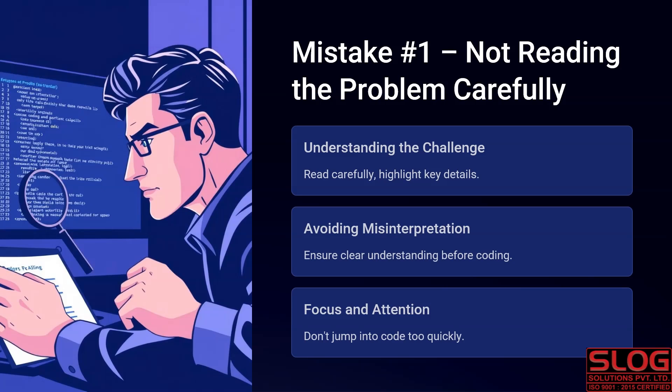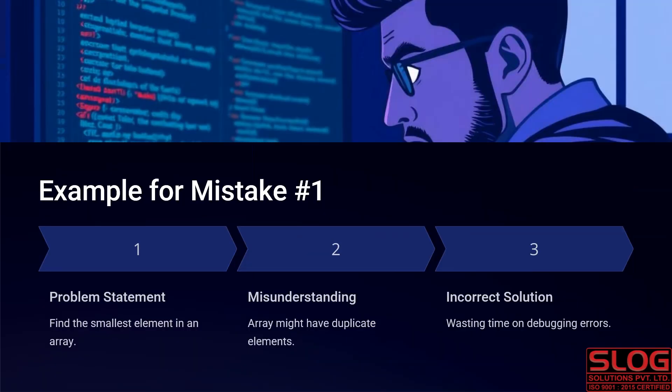Don't jump into code too quickly. A simple example: you are given a problem statement to find the smallest element in an array. We can misunderstand this in many ways. For instance, we might assume there will be a duplicate element. If we code based on that incorrect assumption, we will be wasting time debugging errors, and our solution will likely go wrong.